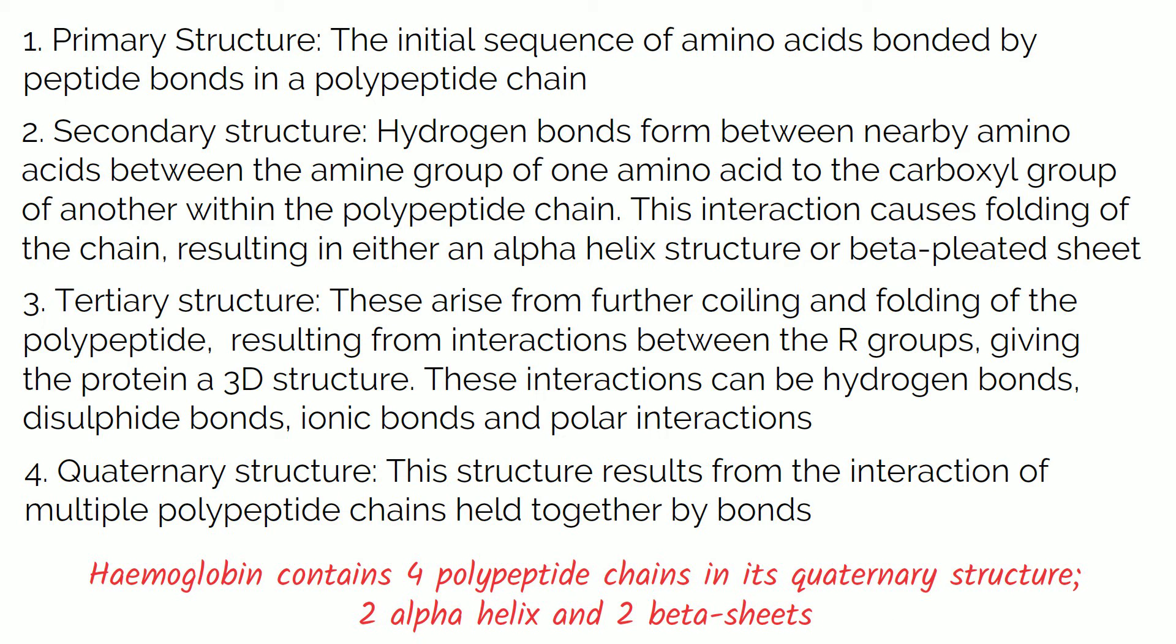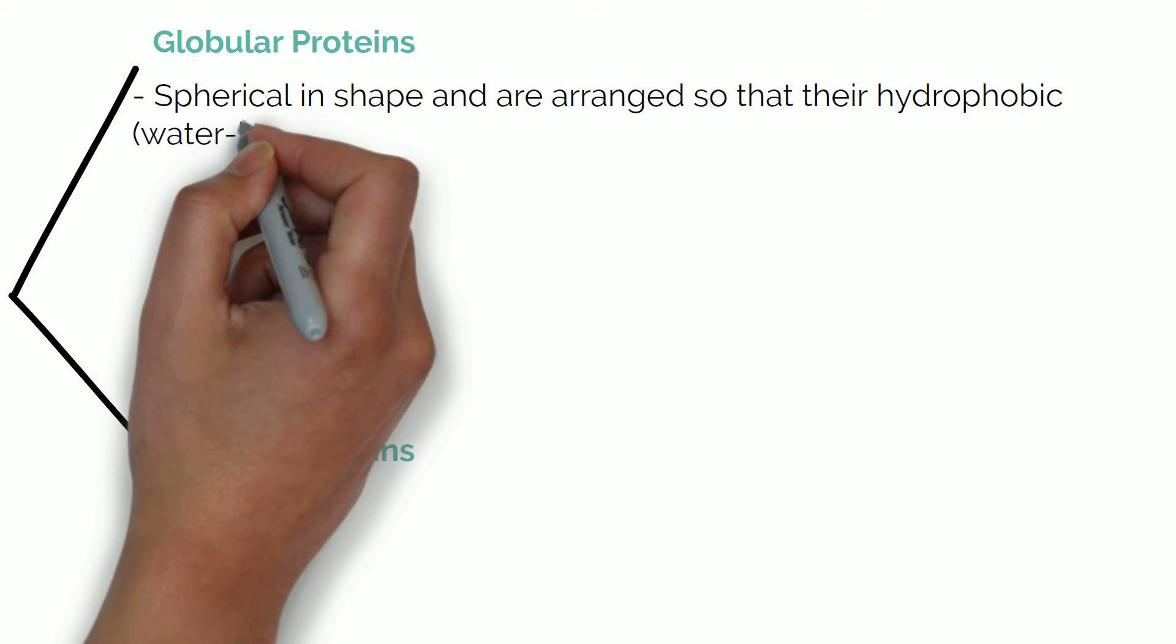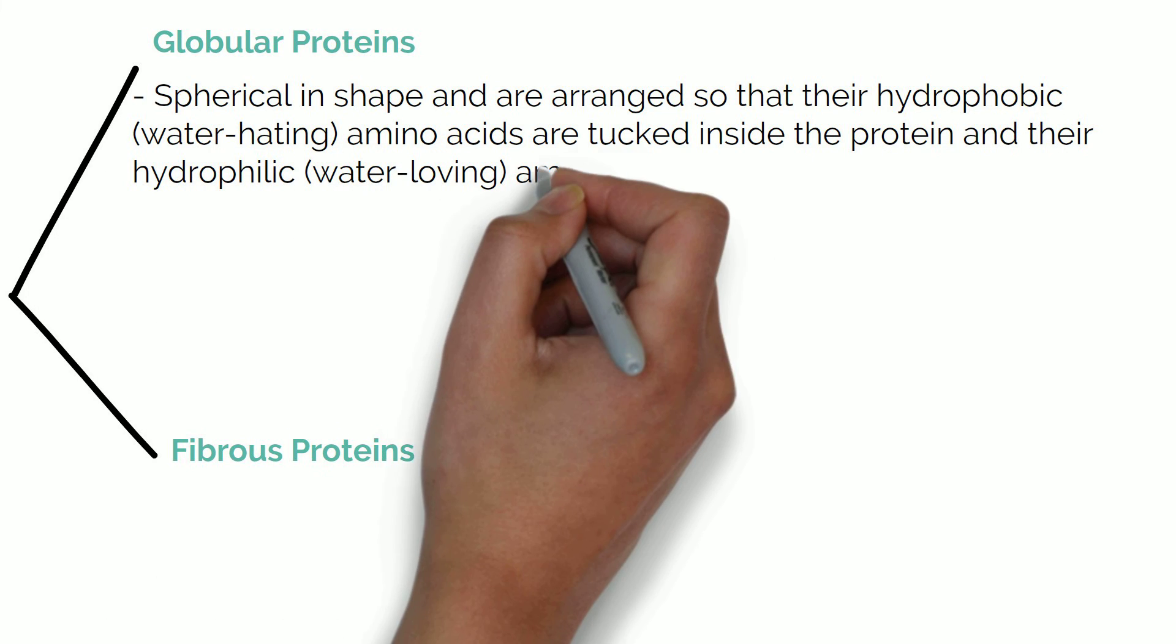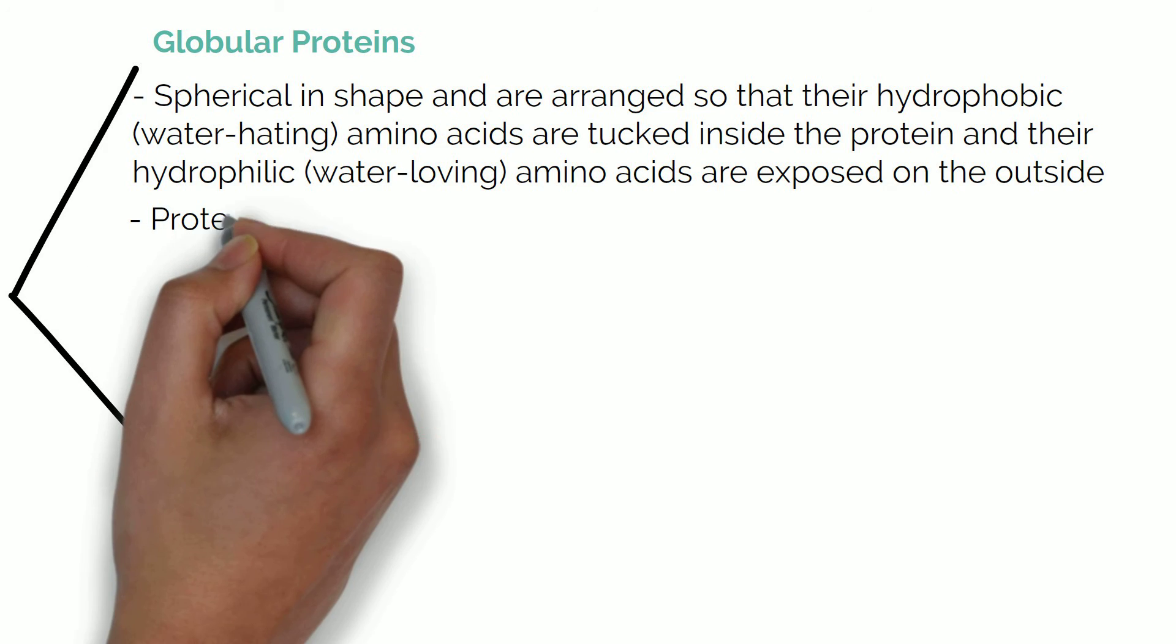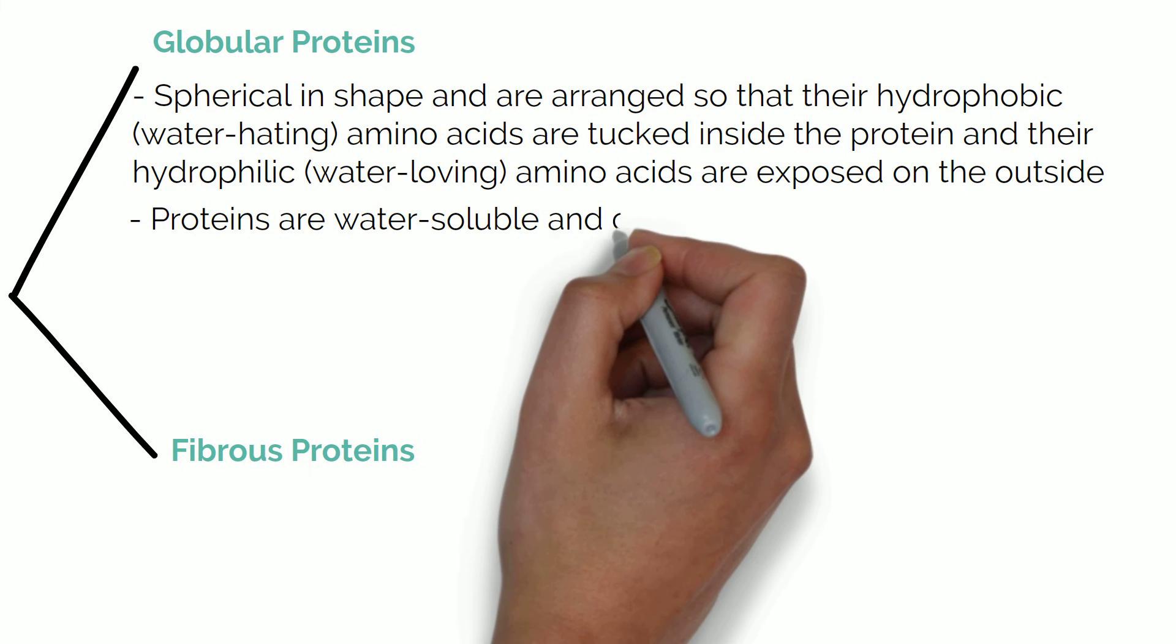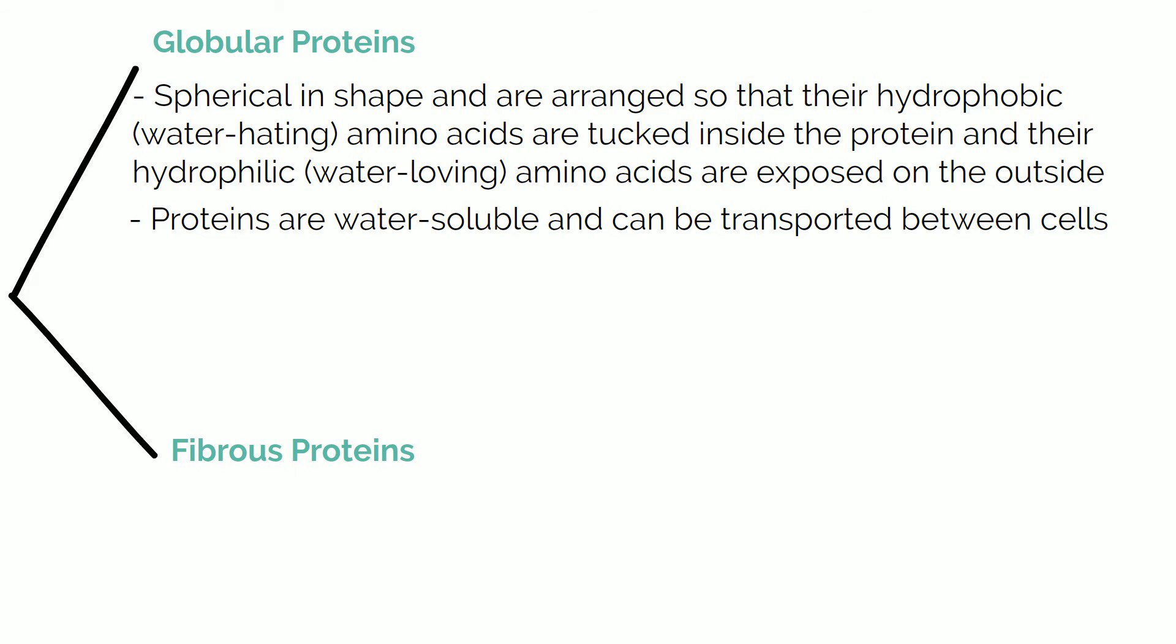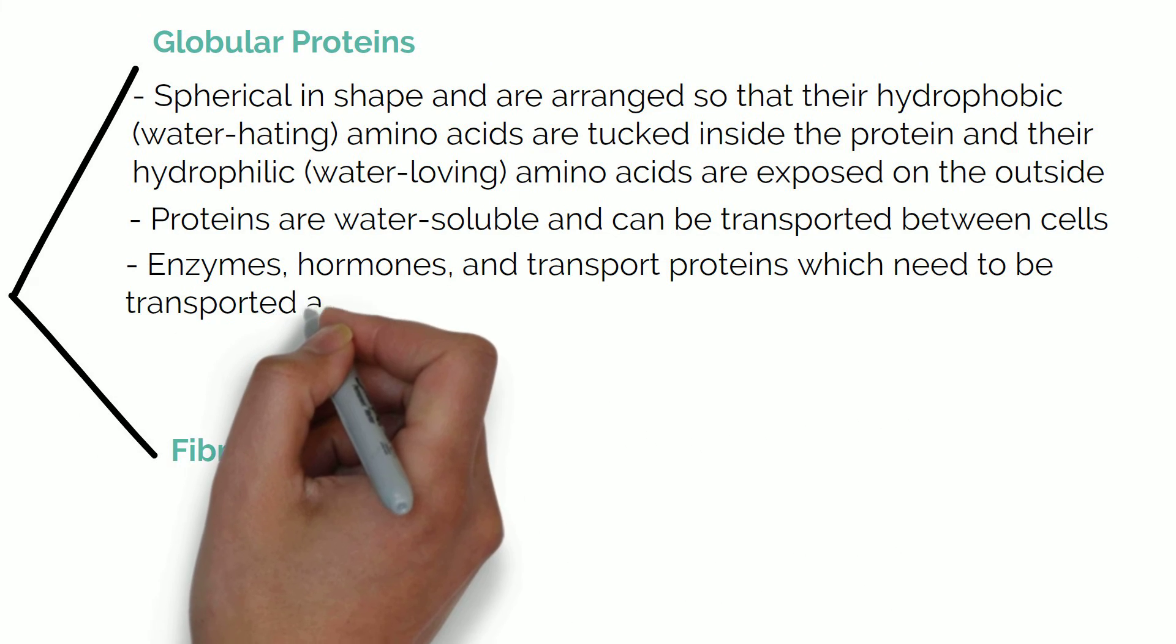All proteins are characterised into two broad groups: globular and fibrous. Globular proteins are spherical in shape and are arranged so that their hydrophobic or water-hating amino acids are tucked inside the protein and their hydrophilic or water-loving amino acids are exposed on the outside. This arrangement means the proteins are water-soluble and can be transported easily between cells. This is important for proteins such as enzymes, hormones and transport proteins which need to be transported around the body.